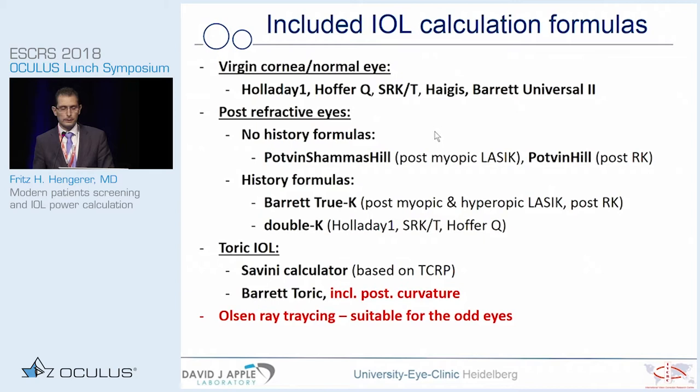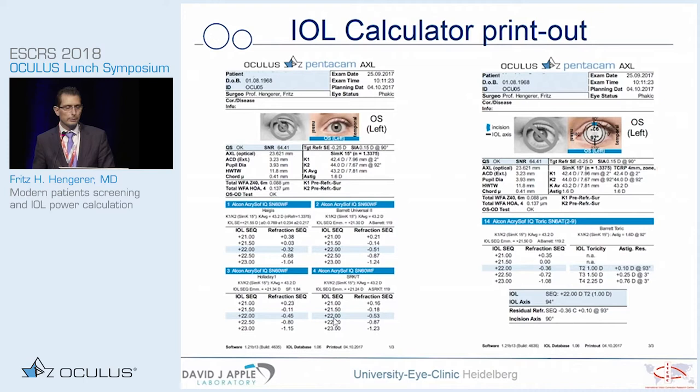The included intraocular lens calculation formulas cover regular eyes, post-refractive eyes with no history and with history formulas, and toric IOLs. I want to highlight that we have the Barrett toric formula including the posterior curvature. What is new with the current software is the Olsen ray tracing, which is suitable for all odd eyes with corneal scars and similar pathologies. This is very important for the next part of the talk, the Heidelberg study, which I will show in a few seconds.